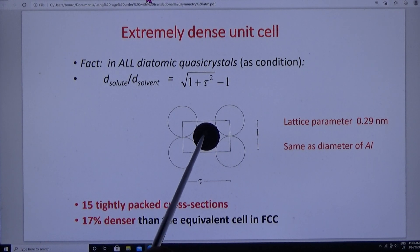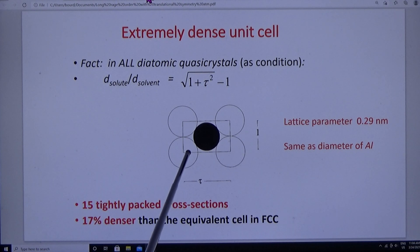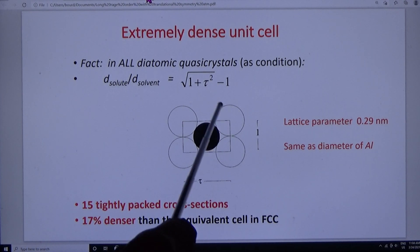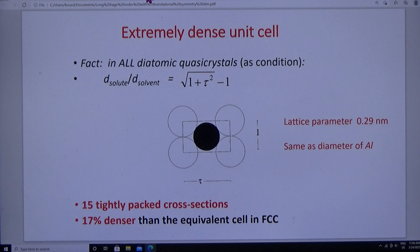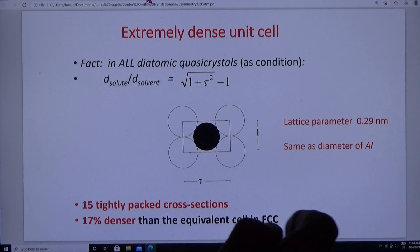One word about this unit cell. The unit cell has a cross-section as shown in 15 different orientations. It's extremely dense. And the unit cell in diatomic crystals has this value for the ratio of the solute atom to the solvent atom. It's the same in all diatomic quasicrystals.